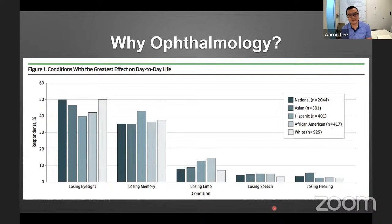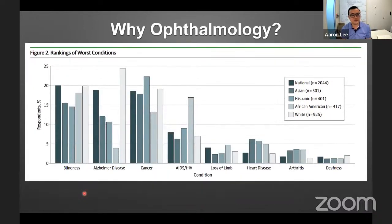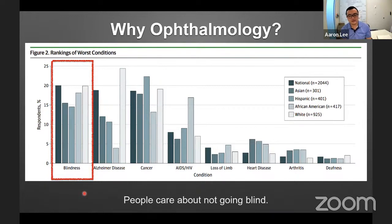Often when I'm speaking to a crowd not familiar with ophthalmology, I like to build a case for why I think ophthalmology is such a nice fit for AI research. First, there's a critical need. In a survey done in the United States asking a diverse group of people what conditions they were most afraid of affecting their lives, blindness actually ranked as high as cancer or Alzheimer's disease. So people really care about not going blind.